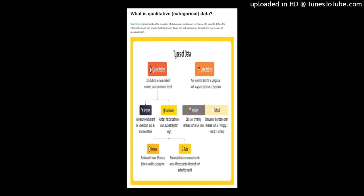The four scales of measurement cover: quantitative data measurable with numbers such as duration or speed; discrete — whole numbers that can't be broken down, such as number of items; continuous — numbers that can be broken down, such as height or weight; interval — numbers with known differences between variables, such as time; ratio — numbers with measurable intervals where differences can be determined, such as height and weight; and qualitative non-numerical categorical data, including nominal — used for naming variables like hair color — and ordinal — used to describe order of values, such as one equals happy, two equals neutral, and three equals unhappy.